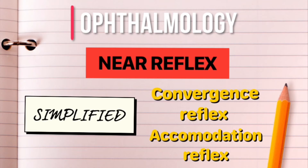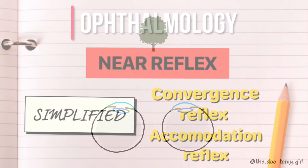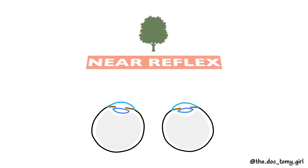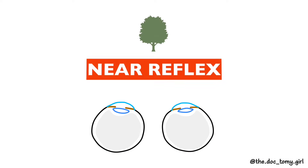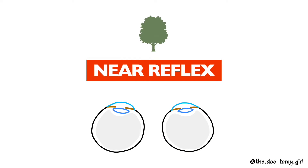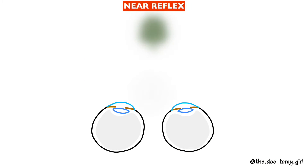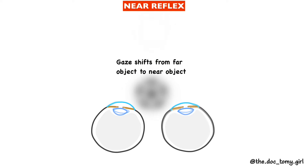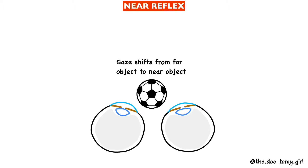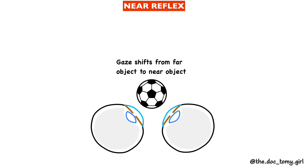This video is about a simplified version of the near reflex. The near reflex is when gaze shifts from a far object to a near object, and three things happen. Firstly, the convexity of the lens increases.